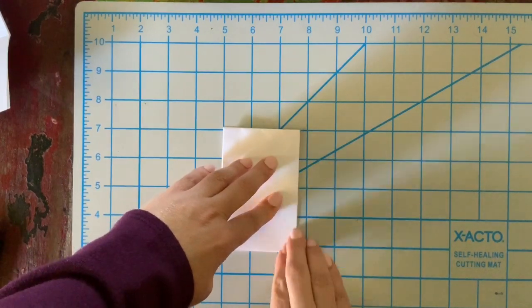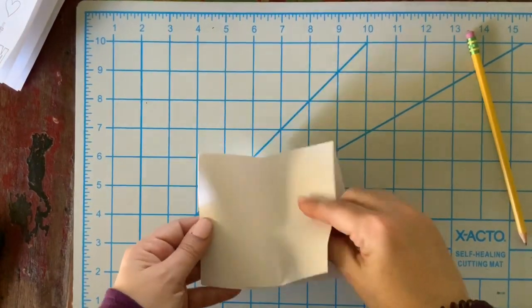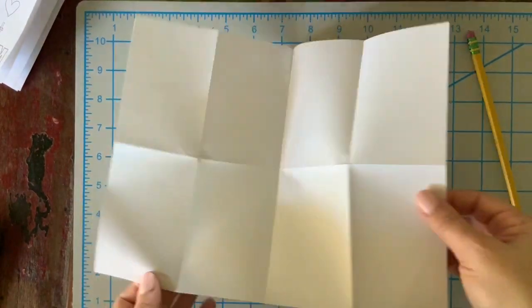Once all your creases have been made firm and you've folded three times, what you're going to do next is actually unfold your piece of paper.